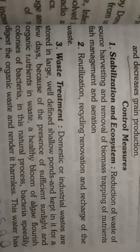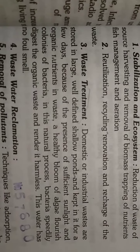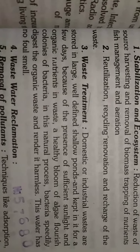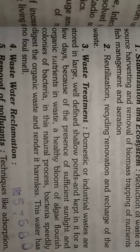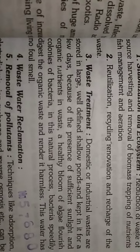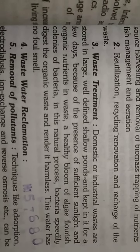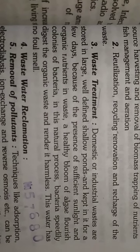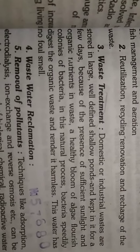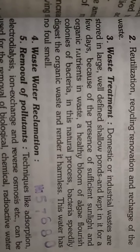Waste treatment is applied to water to regain pure water. Another method is wastewater reclamation, where waste water is subjected to all treatments to retain clean water. Removal of pollutants is done using methods like absorption to remove high solutes, electrodialysis to remove positive and negative electrodes from water, ion exchange, and reverse osmosis.